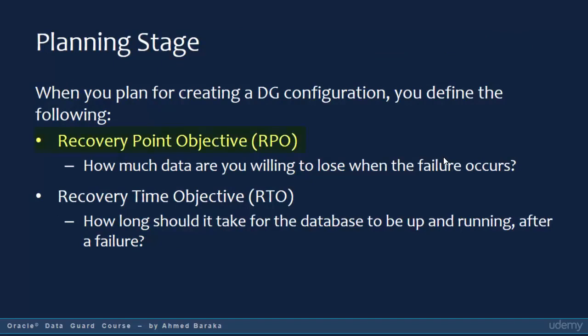When planning your Data Guard, you need to define two things: RPO and RTO — Recovery Point Objective and Recovery Time Objective. RPO is how much data you are willing to lose when a failure takes place. If your application doesn't allow data loss, such as a mission-critical application, you have to use synchronous redo transport — maximum protection or maximum availability mode. Using those modes requires a highly reliable network, and you usually need to define two standby databases so your system doesn't go down if one standby fails. This will also affect the cost of the project.